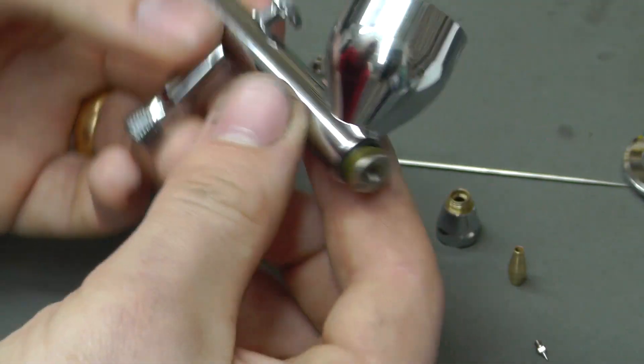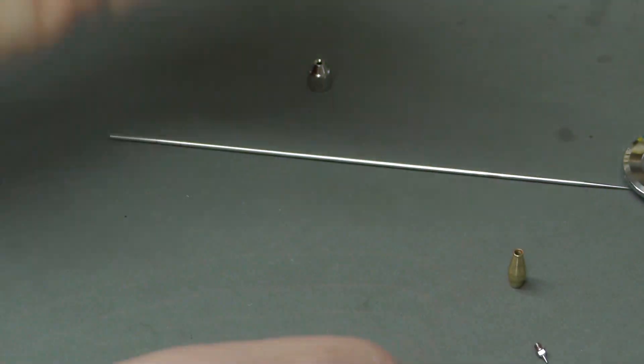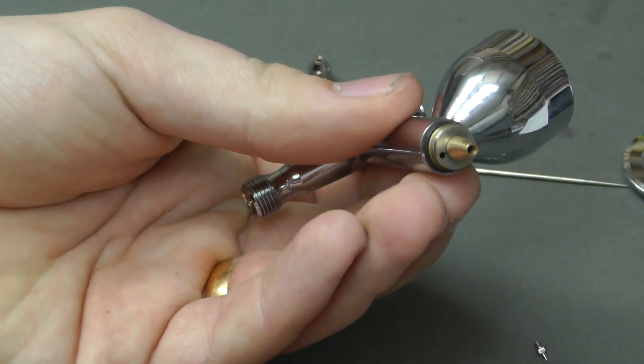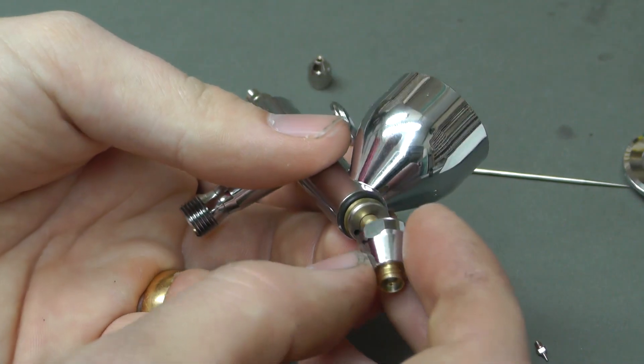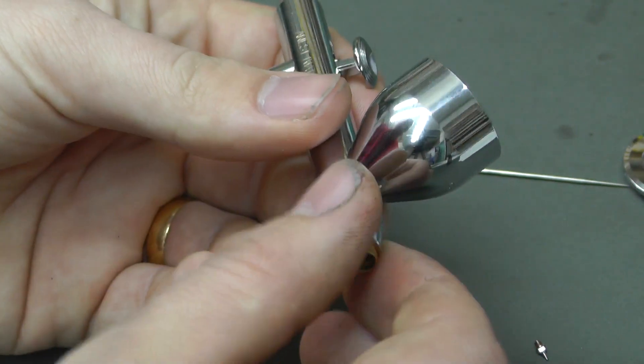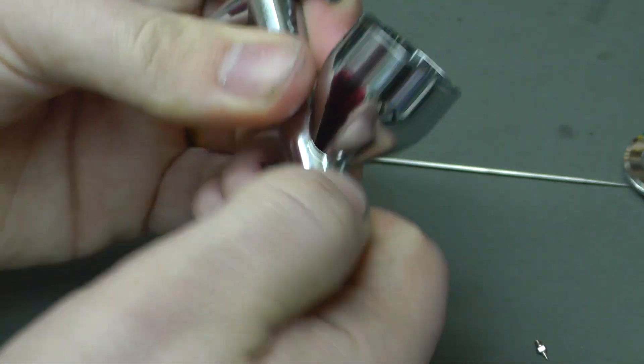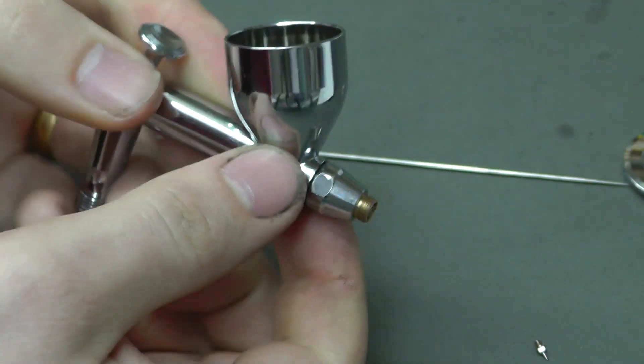And then what we want to do is come to the front bit as well. We're going to put our first part of our nozzle just in there. It fits in. It fits loosely. There's no screwing or anything. And then we just screw on this big back nozzle bit, just like so.